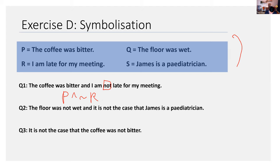Let's do number two. The floor was not wet, and it is not the case that James is a pediatrician. The floor was not wet. Look at the symbolization scheme. I see that the floor is wet is Q. But what we're saying is it is not wet. So we say not Q, and it is not the case that James is a pediatrician. Of course, it is not the case is just a variant of saying James is not a pediatrician. So it is not S.